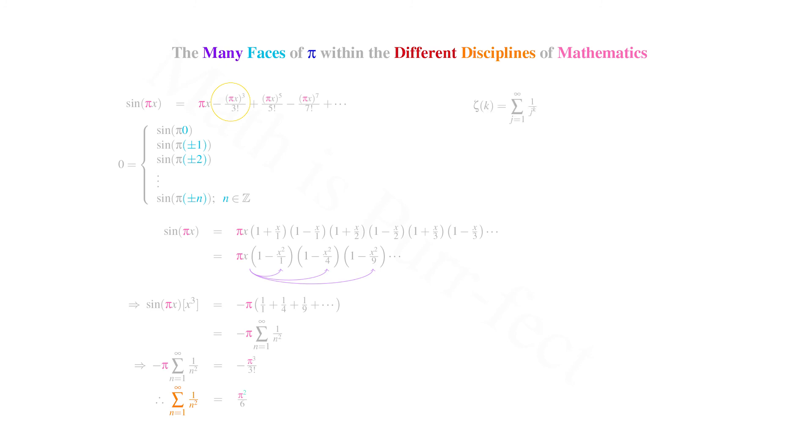However, the Riemann zeta function at k is defined as the sum as j counts from 1 towards the infinite of 1 over j to the kth power. Hence the zeta function at 2 is the sum of 1 over j squared, which is pi squared over 6 by our previous analysis. Solving for pi in this equation gives us the square root of 6 times the Riemann zeta function at 2.